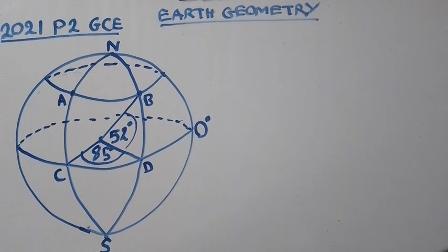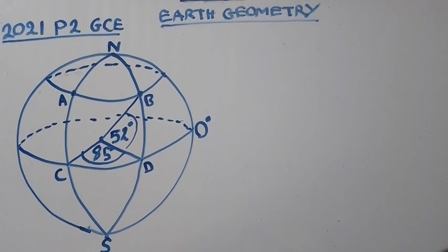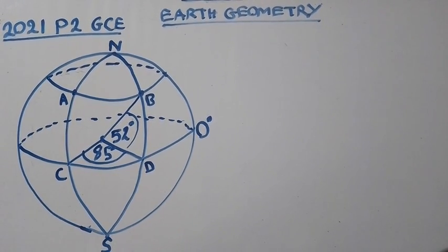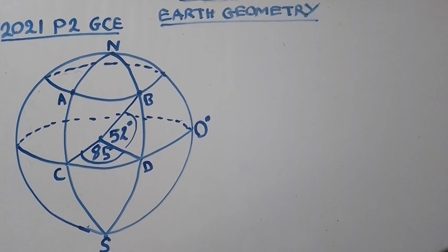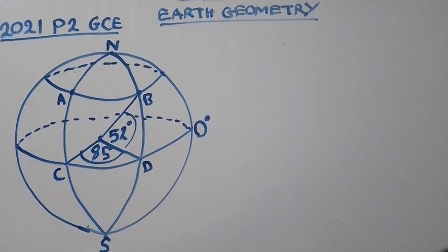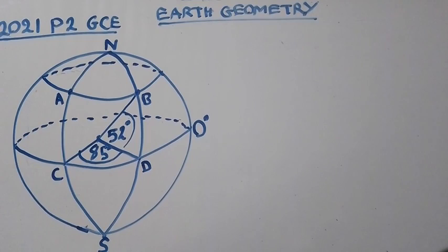Question 2: Calculate the distance between points: Part A, C and D around the equator in nautical miles. Part B, B and D around the longitude NBDS in kilometers.